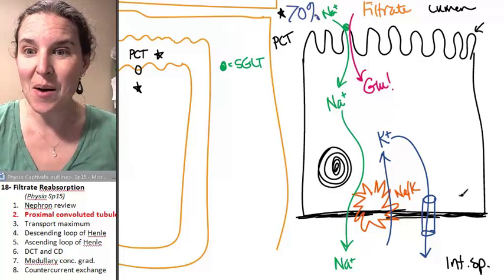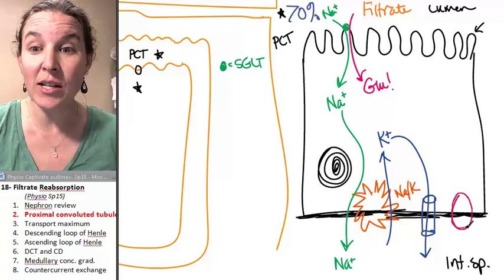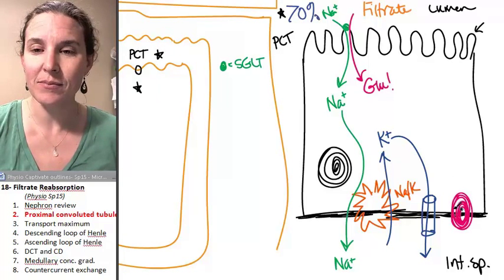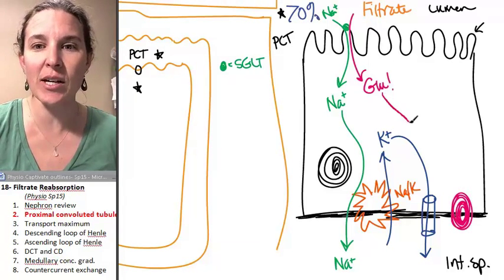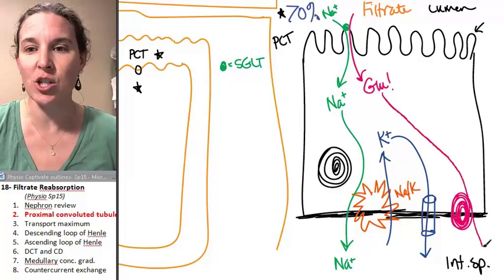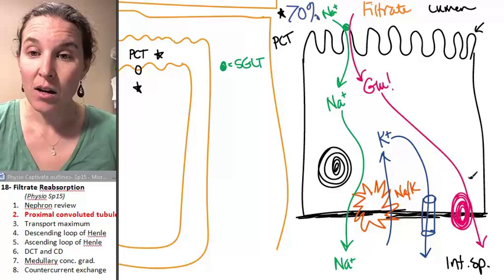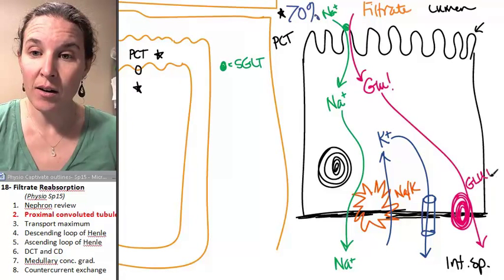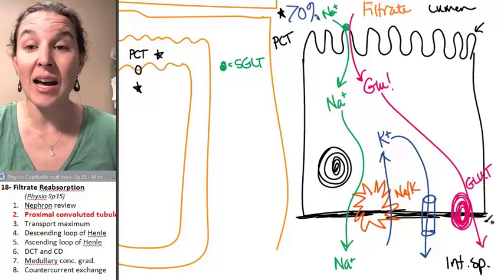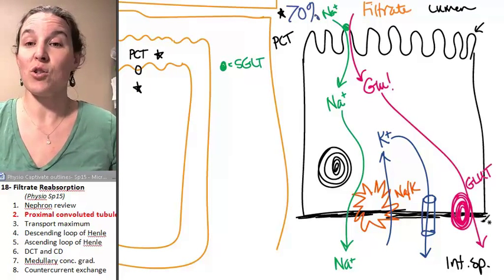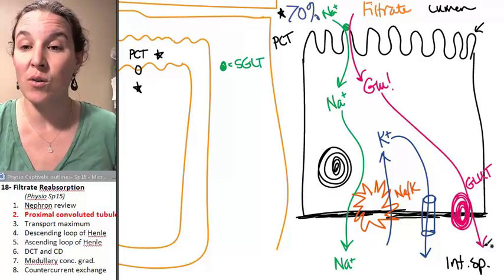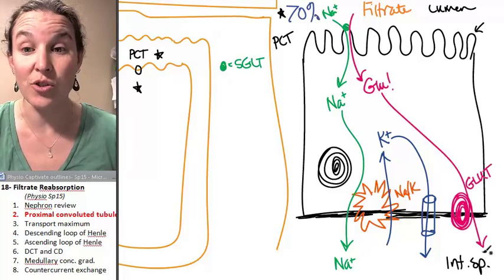Glucose is going to come out through another one of our transporters that we've seen before. Who's this guy? This is an easy transporter, an easy transition. This is GLUT. Do you remember that guy? GLUT is going to allow, it's just facilitated diffusion, piece of cake. It's going to allow glucose out through its own concentration gradient.